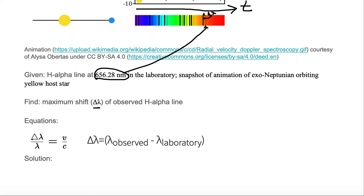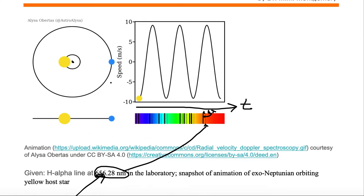We have an equation delta lambda over lambda is equal to v over c, and this lambda on the denominator is the laboratory one or that one that is seen. We want to solve for delta lambda. Now that's related to v over c. Well, v is given by this radial velocity graph.